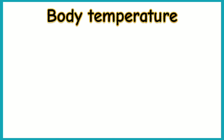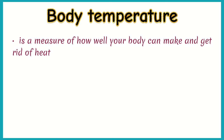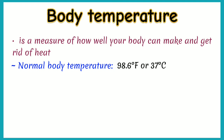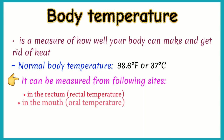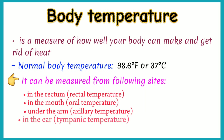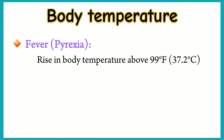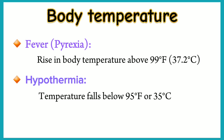Body temperature is a measure of how well your body can make and get rid of heat. A person's normal body temperature is 98.6 degrees Fahrenheit or 37 degrees Celsius. It can be measured from the following sites: in the rectum, in the mouth, under the arm, in the ear, or on the skin of the forehead over the temporal artery. Fever, or pyrexia, is defined as a rise in body temperature above 99 degrees Fahrenheit, that is 37.2 degrees Celsius. Hypothermia is when the temperature falls below 95 degrees Fahrenheit or 35 degrees Celsius.